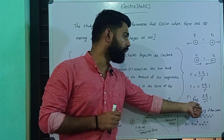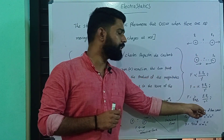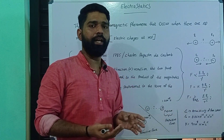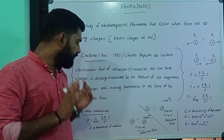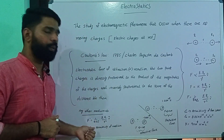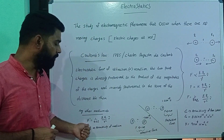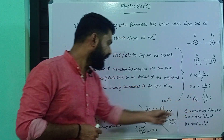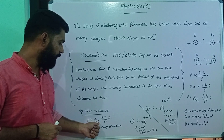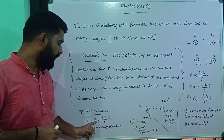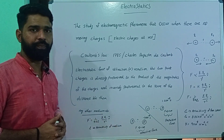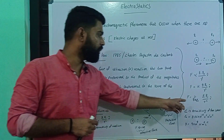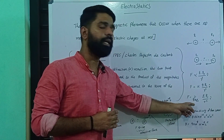We consider the charges in free space. Suppose we consider the charges in a different medium. In that case, the Coulombic force equation becomes F = 1/(4πε) × q1·q2 / r², where instead of ε₀ we use ε, the permittivity of the medium. This is the Coulombic force equation in a different medium, and the previous equation is for free space.